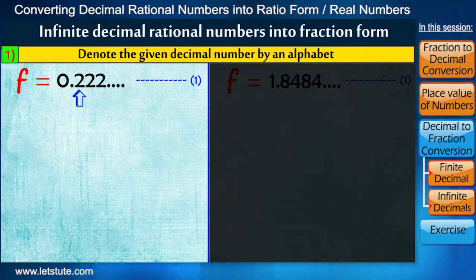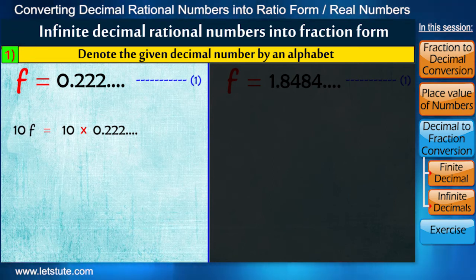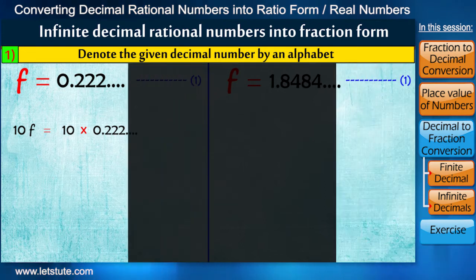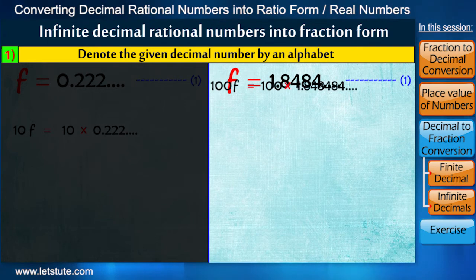Here number 2 is repeating, i.e., only one digit. So we shift number 2 to one column on the left by multiplying with 10. Now as we know that we are multiplying 10 on right hand side, so we will also multiply on left hand side to balance this. Same way, in second number 2 digits are repeating, so we multiply by 2 tens, that is 100, on both sides.